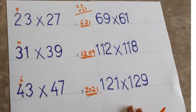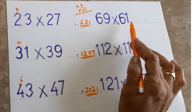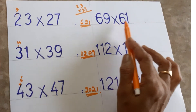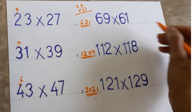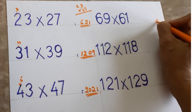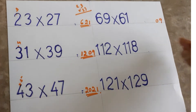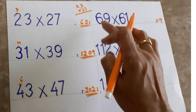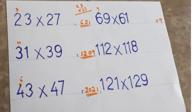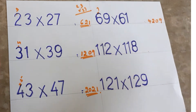Within seconds you can do this. Now 69×61: look at the units place — nine and one. Nine ones are nine. Single digit, so write zero nine: 09. Then six — take the next number, seven. Six sevens are forty-two. So the answer is 4209.